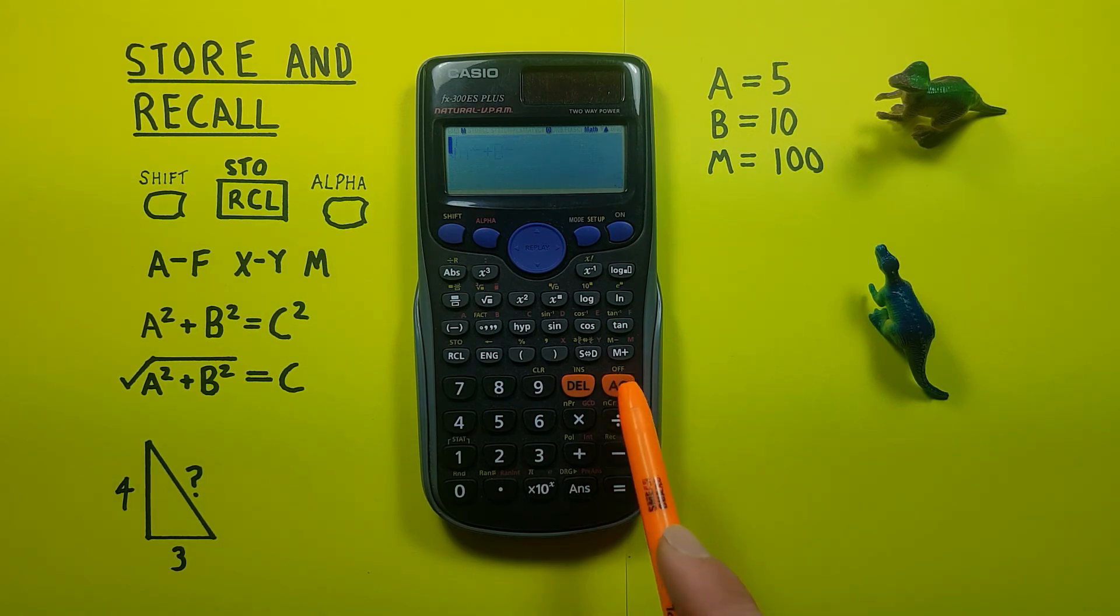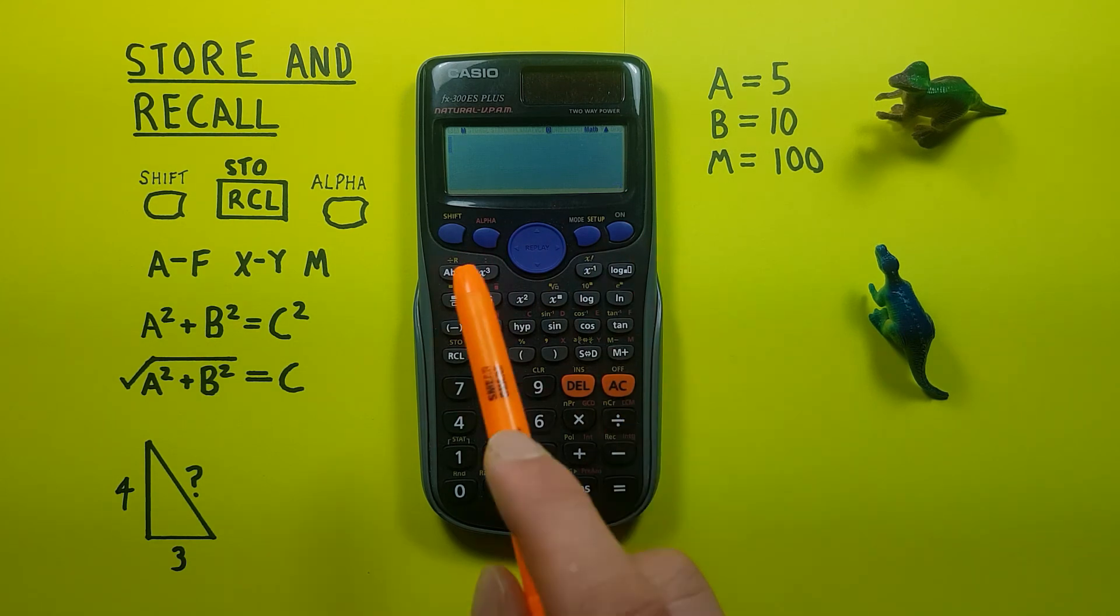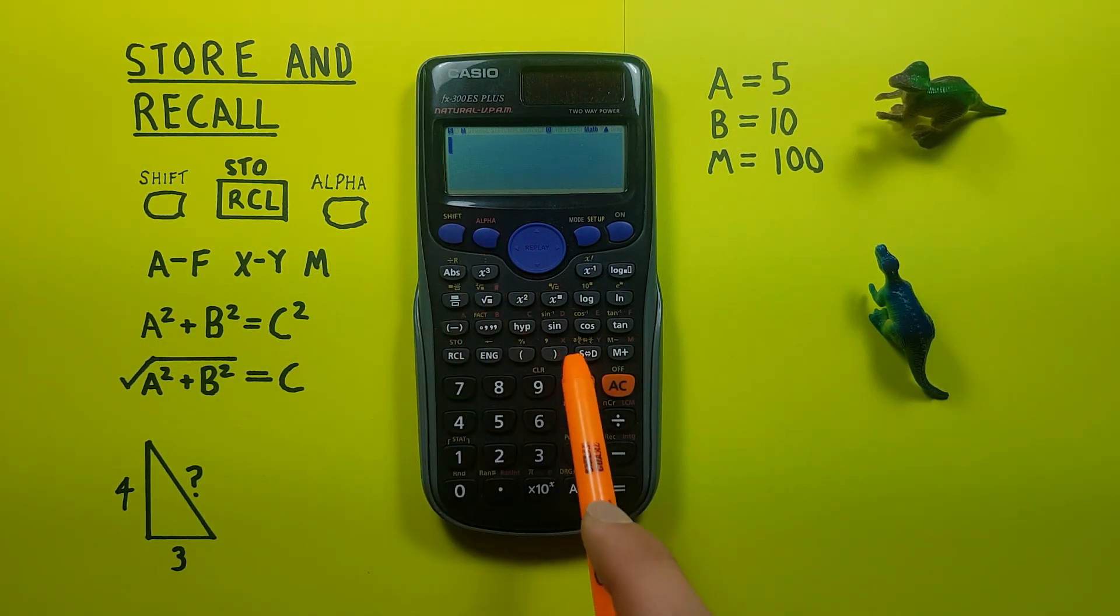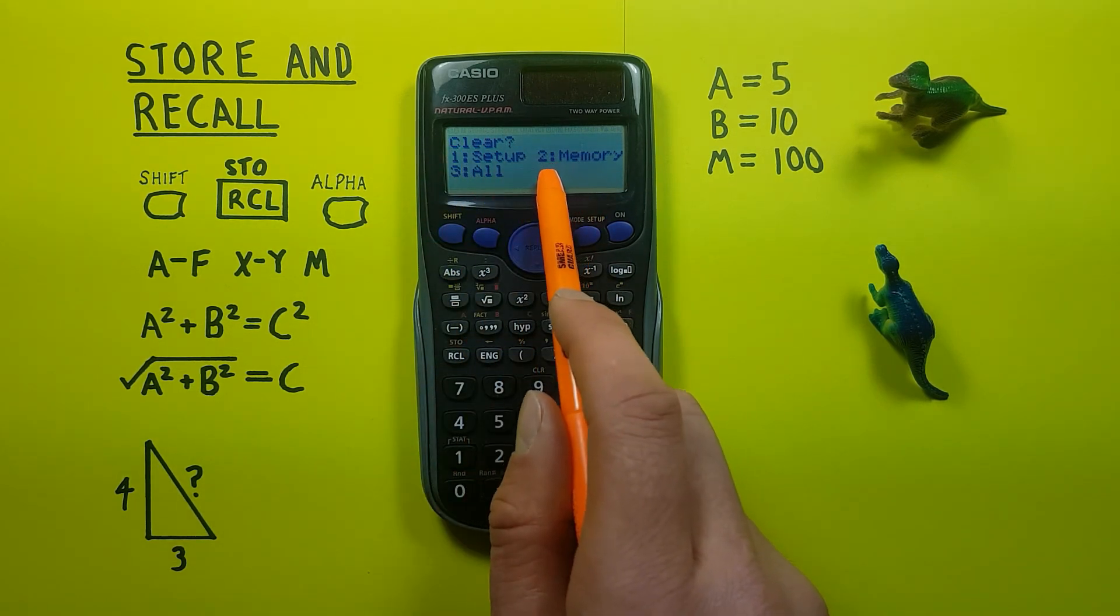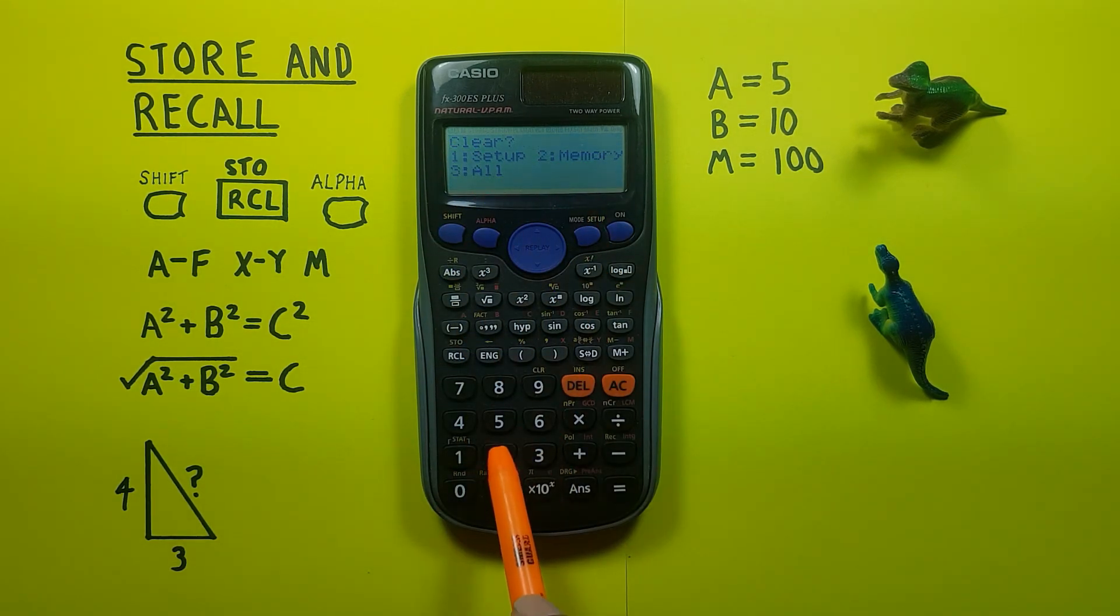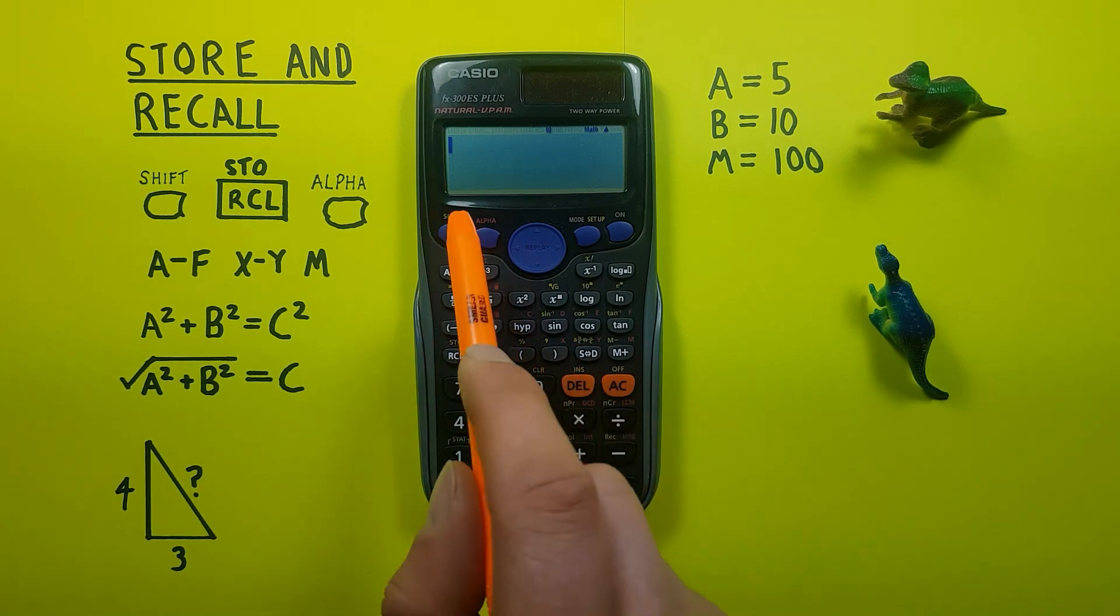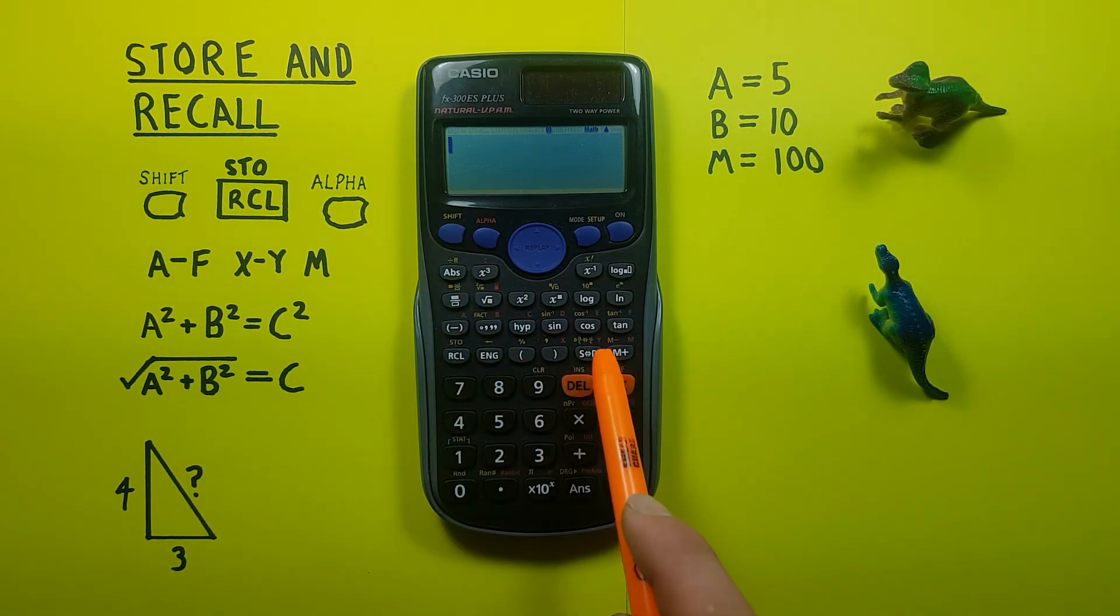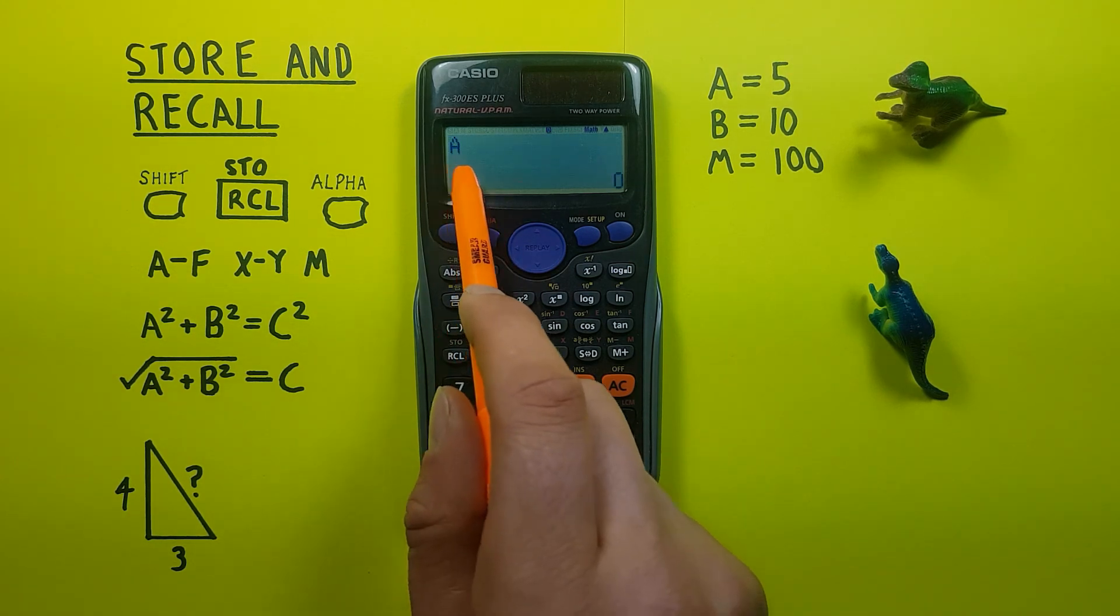When we're done with all our calculations, we can clear our memory slots with the second function of the 9 key here. You can recall A, you see we have 4 in there right now, but if we want to get rid of all that, we press shift 9, which brings us to this screen here, clear screen, and we want to clear the memory, so we can choose 2, and that equals for yes, and it will tell us it's complete. So we press the AC key. Now all our memory slots will have been cleared and returned to 0. So if we recall A now, you see it's equal to 0, recall our B, 0, etc.